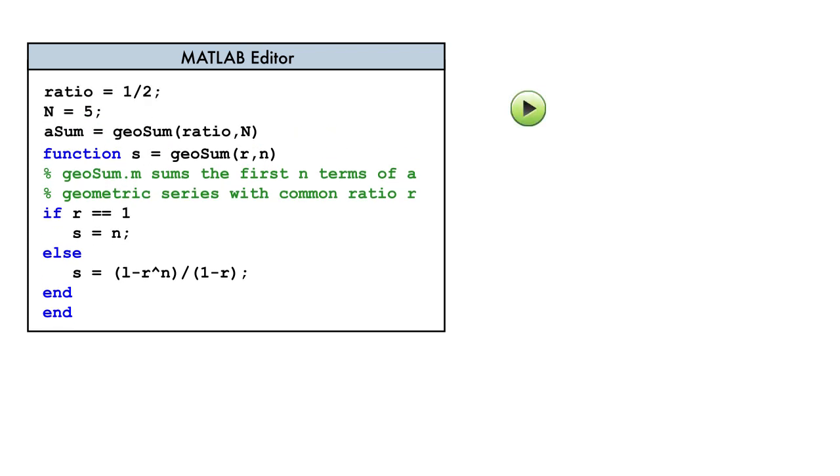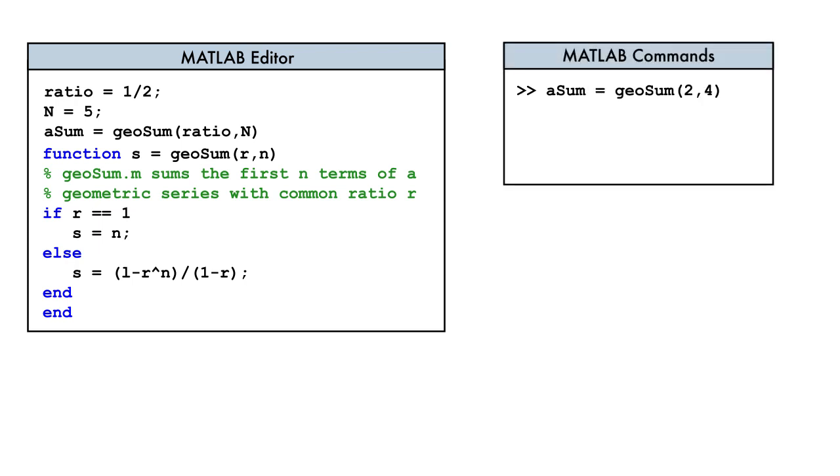When we run the script, our function is used to calculate the geometric sum. But, what happens if we need our function in other code files, or at the command prompt?